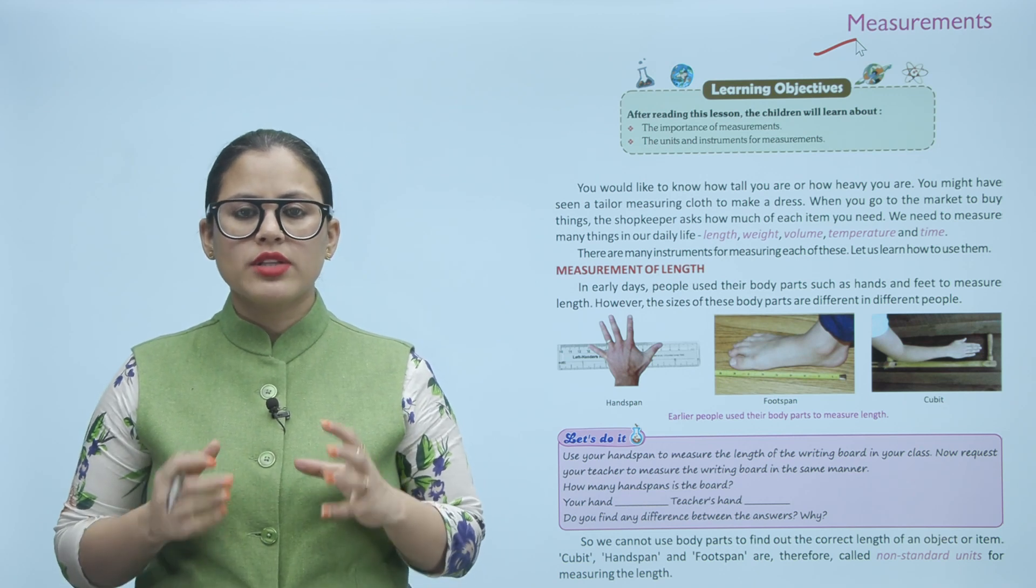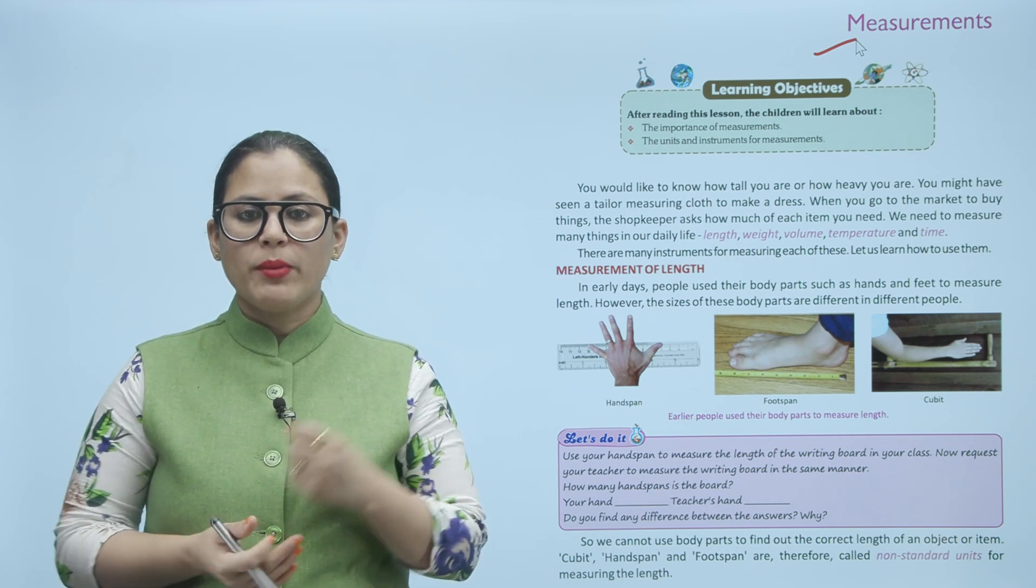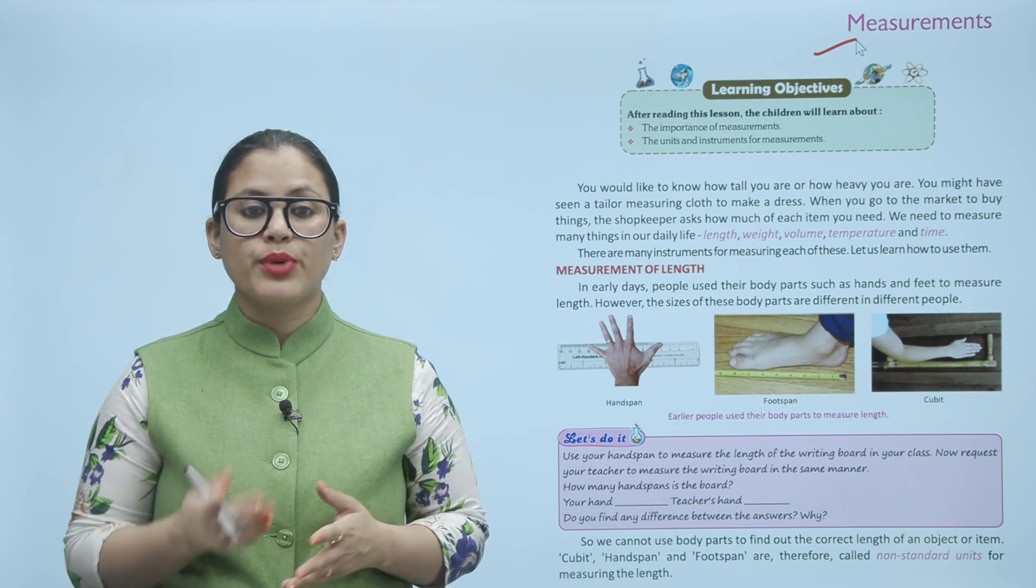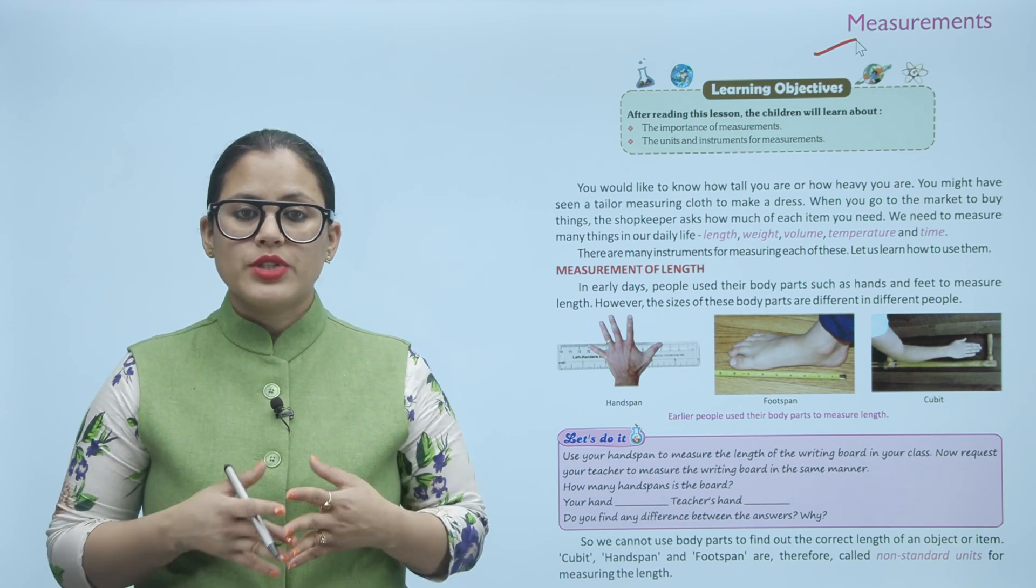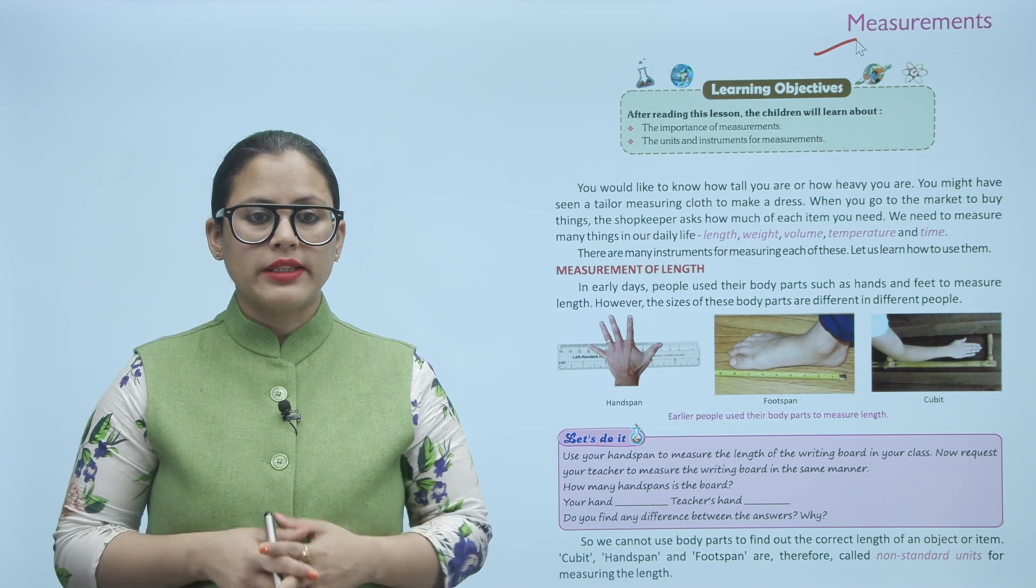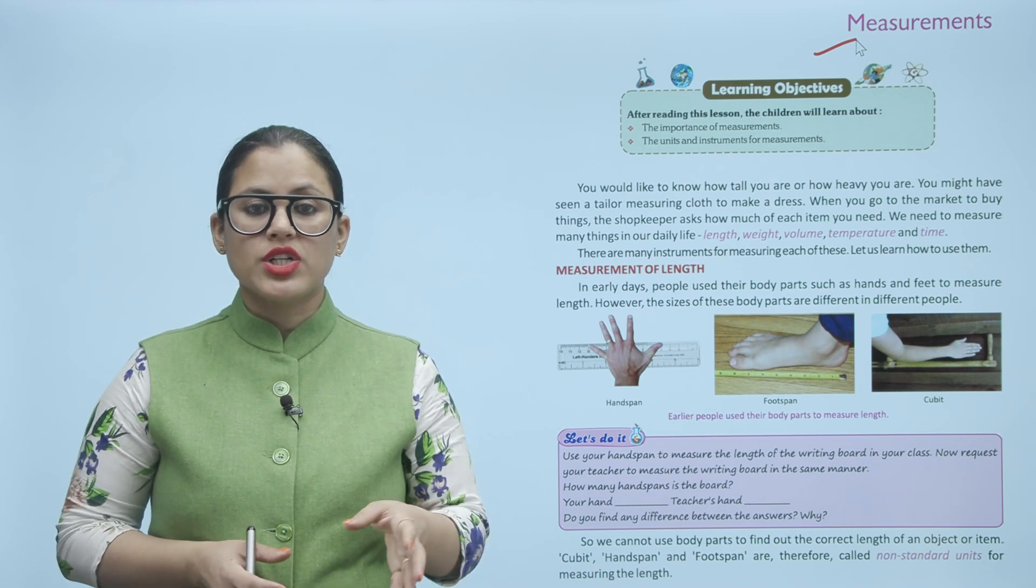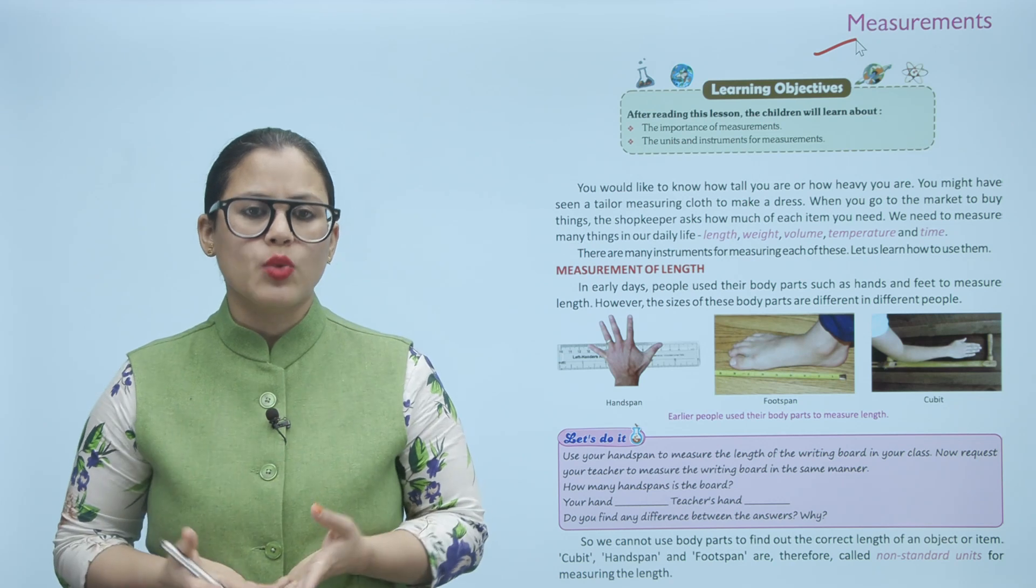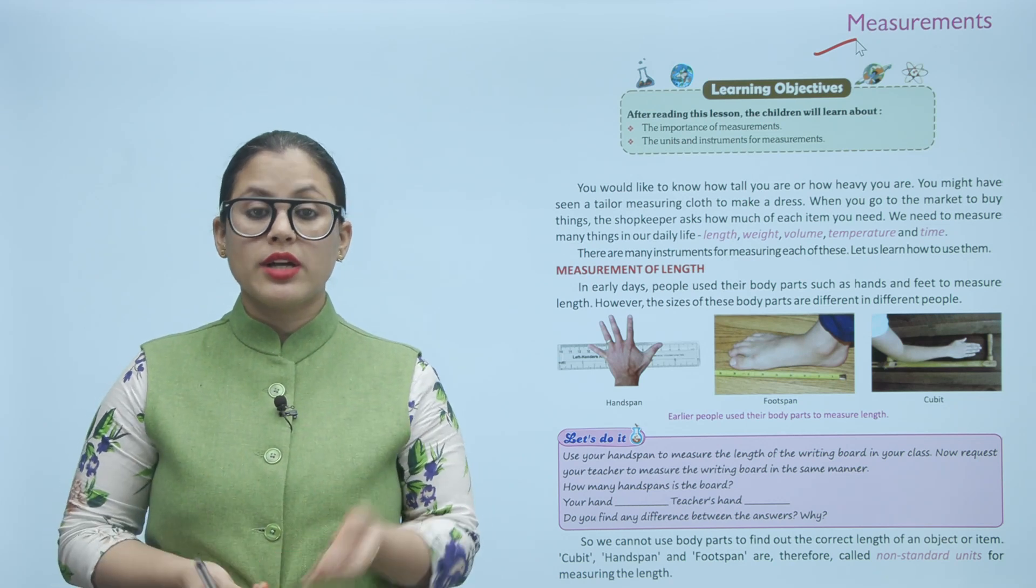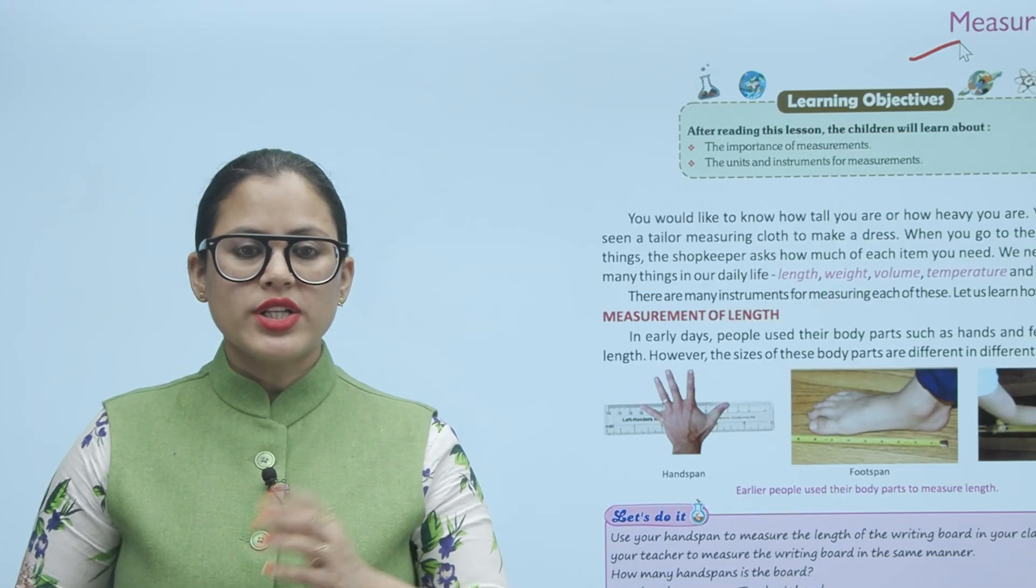In daily life, we have a lot of instruments that are required to measure. We have to measure some things like time, temperature, length, weight. You have to measure your measurement to make a dress. If you go to the market, you have to ask what the requirement is: 1 kg, 2 kg, grams. We have to learn about some instruments.